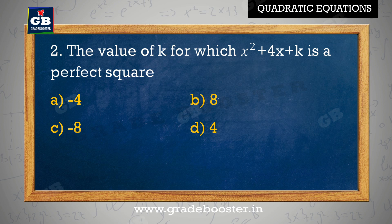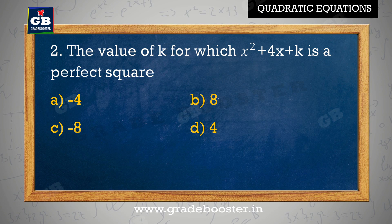x square plus 4x plus K is a perfect square. Find the value of K for which x square plus 4x plus K is a perfect square. A. minus 4, B. 8, C. minus 8, D. 4.